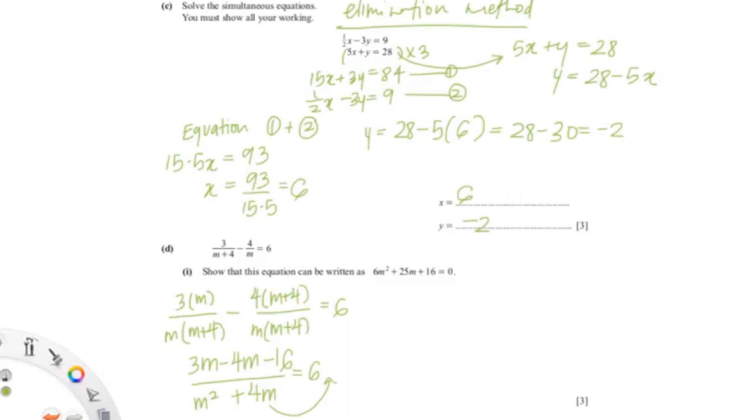Now I'm going to bring m²+4m to the other side. That will be 3m-4, which I could just simplify, would be -m-16. Equals to 6(m²+4m). So now I'm just going to expand the bracket, which is 6m²+24m.